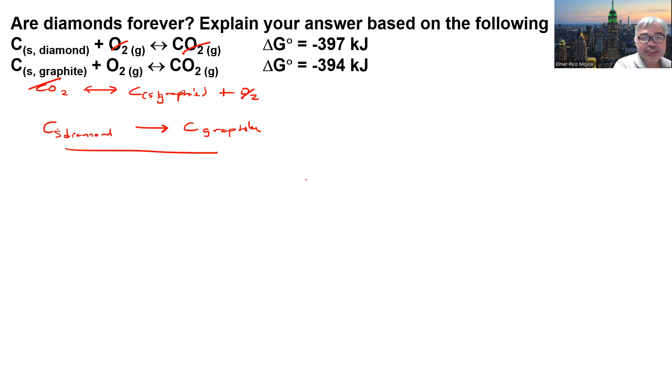Giving you this net reaction, and in doing so this one becomes a positive value, giving us a delta G that is negative 3 kJ.